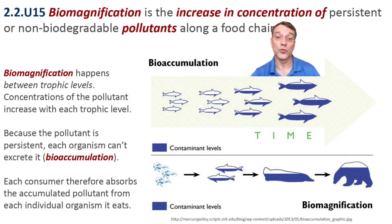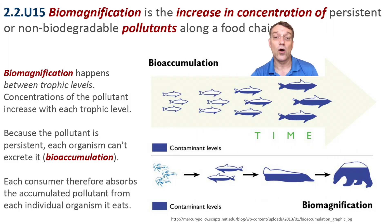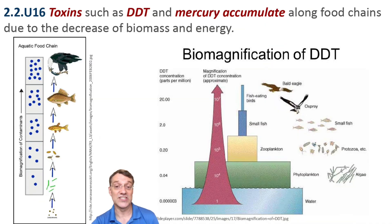Biomagnification is related to bioaccumulation, but it's distinctly different. Biomagnification refers to the increase in the concentration of these pollutants as they move higher and higher up the food chain. Since each consumer eats many prey organisms, they accumulate all the pollutants those prey had stored, leading to increasingly dangerous concentrations at higher trophic levels. Toxins such as DDT and mercury accumulate along food chains due to this biomagnification process.